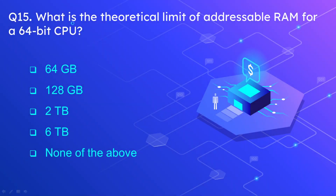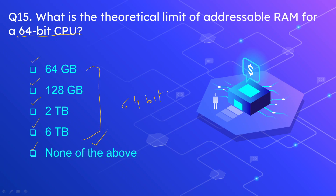Question number 15: what is the theoretical limit of addressable RAM for a 64-bit CPU? The options are 64GB, 128GB, 2TB, 6TB, or none of the above. The correct answer is none of the above. A 64-bit system supports way more than all these options — typically up to 16TB or possibly more.